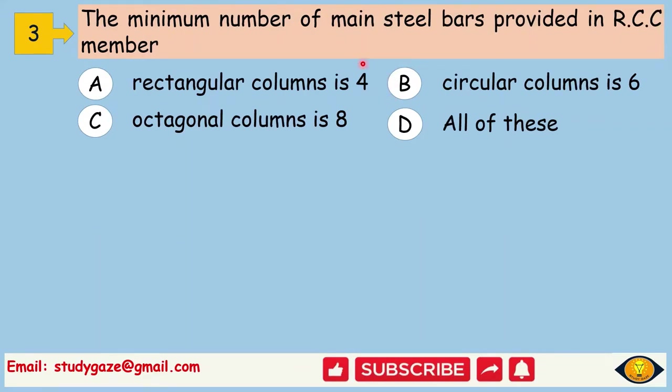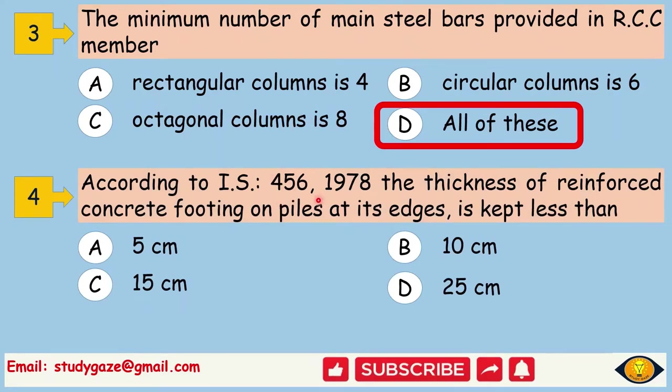The minimum number of main steel bars provided in RCC member. The answer is all of these. That means for rectangular columns, number of main steel bars is 4. For circular column, it is 6. For octagonal column, it is 8. According to IS 456-1978, the thickness of reinforced concrete footing on piles at its edges is kept less than. The answer is 15cm.